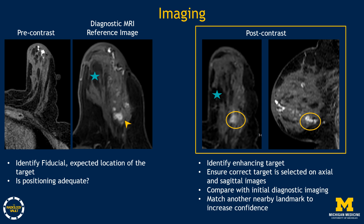After appropriate positioning, we obtain an initial pre-contrast image. We verify that the fiducial or vitamin E marker is visible, and we estimate the expected location of our target using landmarks to determine if it will fall within the grid and be accessible. If this is the case, we will then inject IV contrast. On the post-contrast image, we have identified our target in the yellow circles on both the axial and sagittal planes. It can be helpful to match another landmark, like this fat lobule, to improve confidence in the selected target.